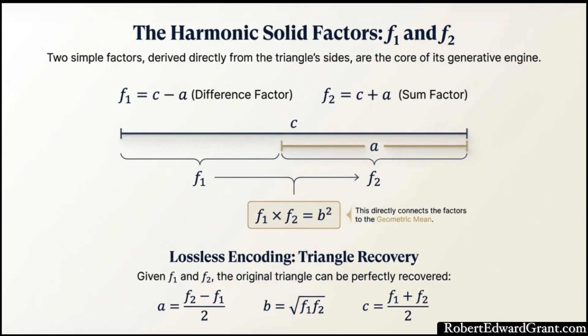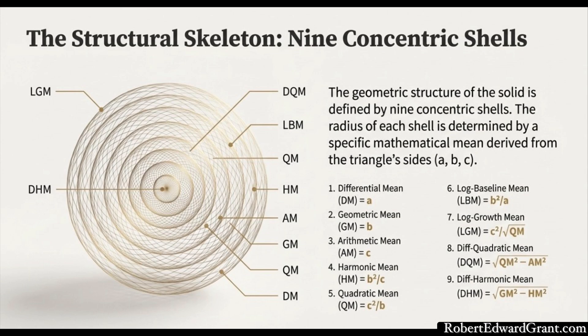The sources say this triangle actually generates nine fundamental means, including things like the harmonic mean, the quadratic mean. They all serve a very precise structural purpose. They define the shell radii, basically the exact distances from the center where the vertices of the final polyhedron have to land. They form a self-similar cascade, meaning the structure folds out using the same ratio over and over, a ratio of R equals C over B.